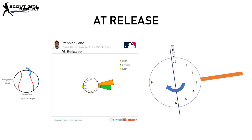Let's isolate Cano's sinker since that's the focus of this video. It's shown in orange on the Baseball Savant chart, close to three o'clock. On the right, I lined up the sinker block on my own clock and added an axis and arrow to help show the spin. As opposed to the original example pitch, this sinker is spinning at a pretty significant tilt — due in part to his release point, how the ball is angled at release, and his grip. And the spin axis is no longer horizontal because of that tilt.